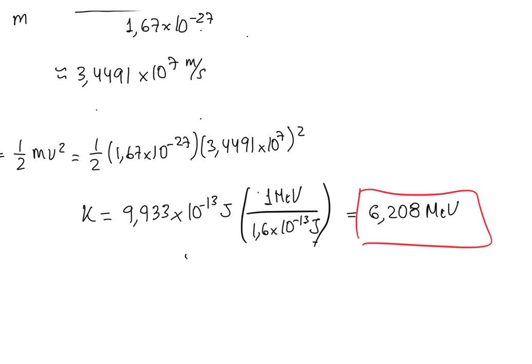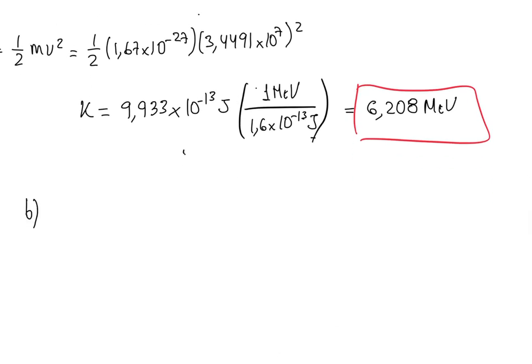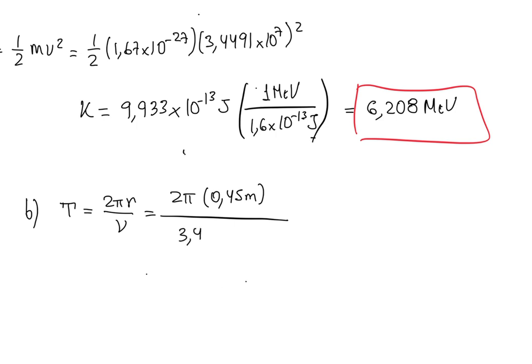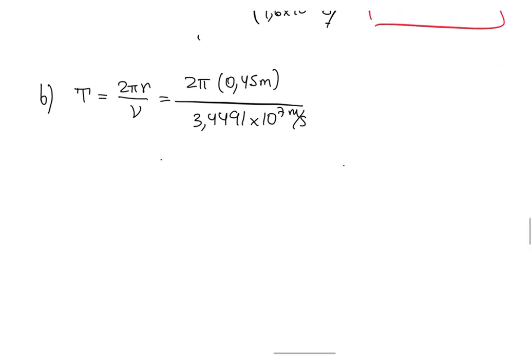For part B, the question is: what is the time for one revolution of a proton orbiting at the maximum radius? The period is 2πr / v, so that will be 2π times the radius of 0.45 meters divided by the speed of 3.4491×10⁷ m/s. Substituting that into your calculator gives you the period.